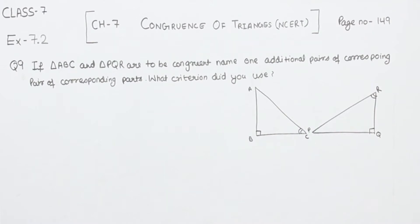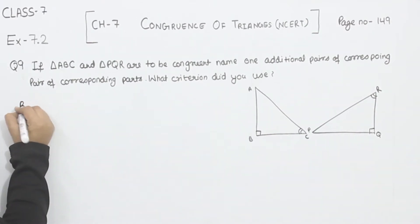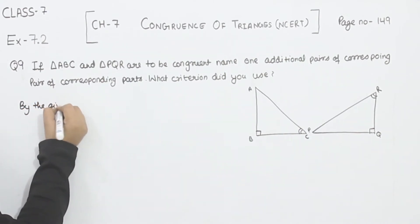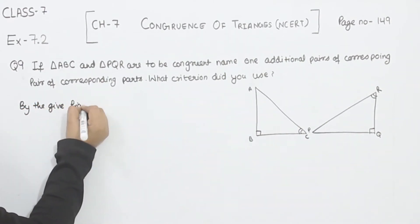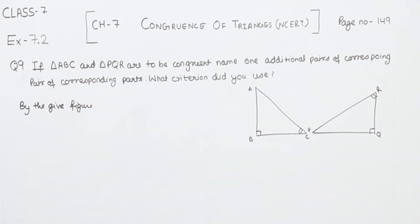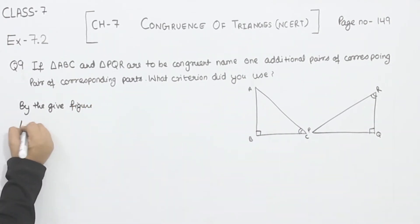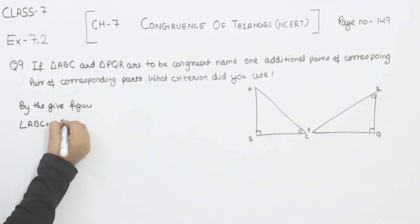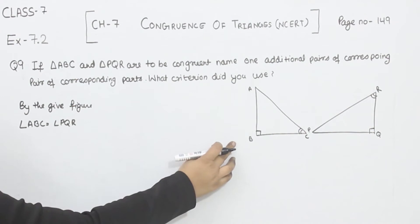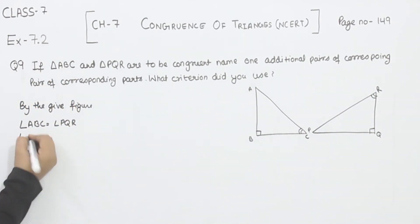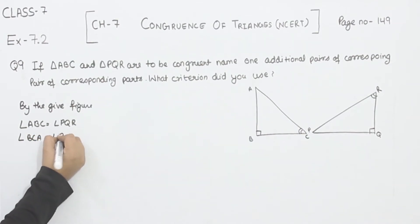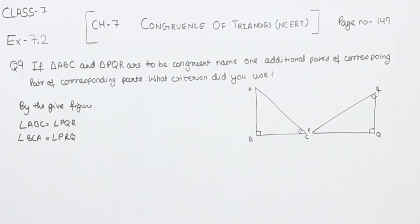By the given figure, as given, angle ABC is equal to angle PQR, and angle BCA is equal to angle QRQ. This is given in the question.